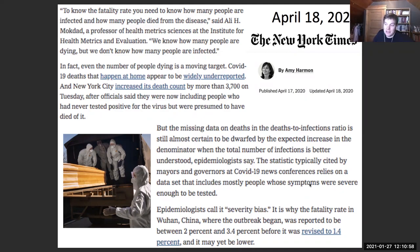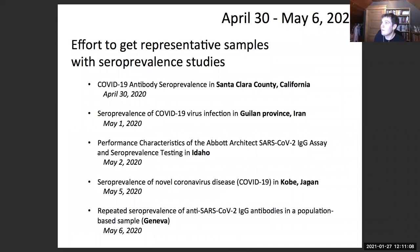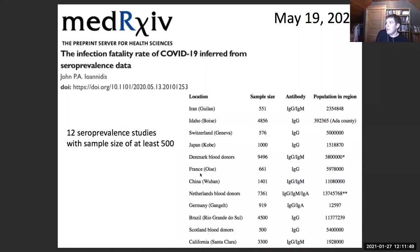To address this, researchers began conducting seroprevalence — or antibody — studies to get representative samples. In just the first week of May, at least five different groups published papers testing random samples of people in communities for antibodies. These included the Santa Clara study, and studies in Iran, Japan, Idaho, and Geneva. A review by Ioannidis found 12 such studies with a sample size of at least 500, showing how quickly these seroprevalence studies emerged.